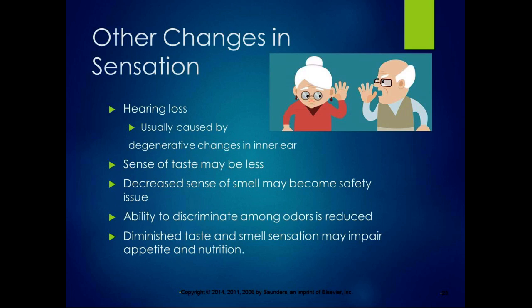Hearing loss is usually caused by degenerative changes in the inner ear and is very common with aging. The sense of taste might be diminished and could contribute to anorexia or loss of appetite, since smell is a big part of appetite. Decreased sense of smell can also become a safety issue — for example, not noticing the gas is on. The ability to discriminate among odors is reduced, and diminished taste and smell can impair appetite and nutrition, leading to many effects on the body.